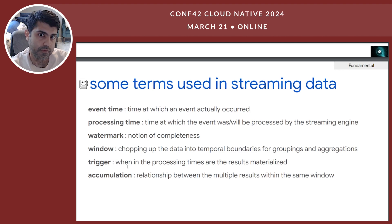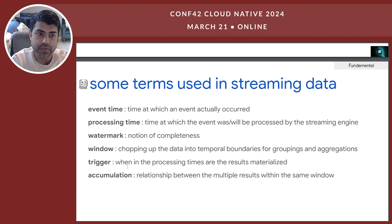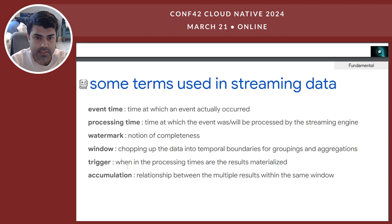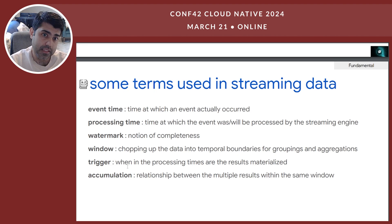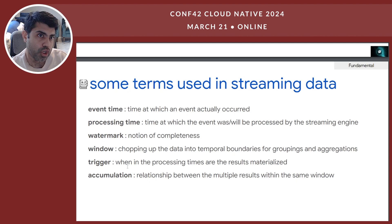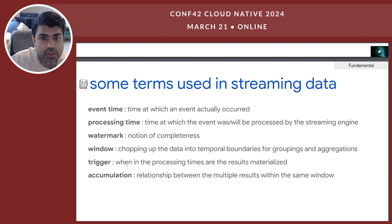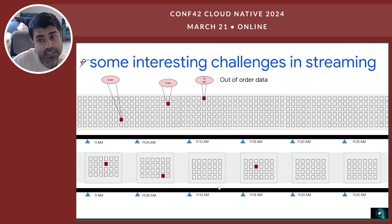Windowing is about chopping up data into temporal boundaries for groupings and aggregations. If you have to aggregate a chunk of streaming data, you window it — similar to batch where you have group-by aggregates. You need a start and stop to group by and aggregate, and that start and stop in the streaming world is called a window. Triggers define when, in processing time, the results are materialized. Accumulation is the relationship between multiple results in the same window — do you want a running sum or just one sum for a given window?